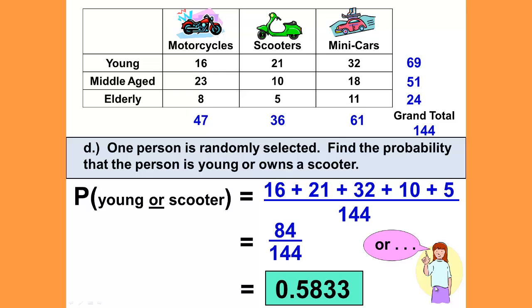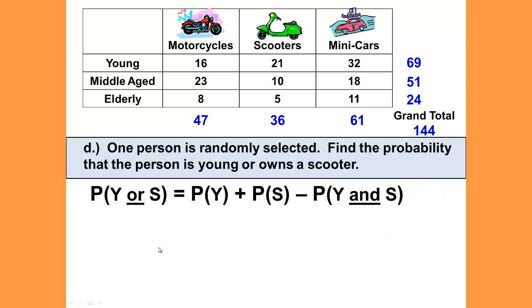Oh, there she is again. There's our or girl. And she's going to tell us that we could use subtotals with the addition rule instead of adding up the individual numbers. Remember that the addition rule would say that to do an or, or means to add. So we could add the probability of being young to the probability of being a scooter, just remembering to subtract out the overlap of being the probability of young and scooter that we've added twice. The total on each of those is the subtotal for young is 69, and the subtotal for scooters is 36.